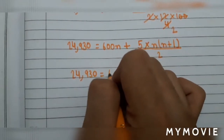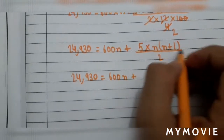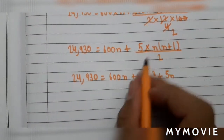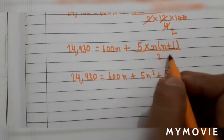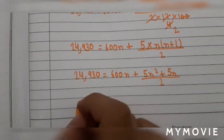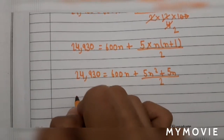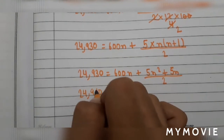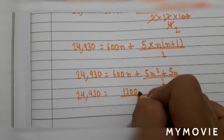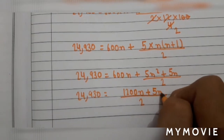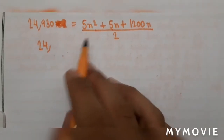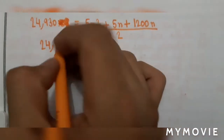Now take the LCM. 24930 equals 600n plus 5n(n+1) divided by 2. Taking LCM as 2, we get: 2 × 24930 equals 1200n plus 5n squared plus 5n.